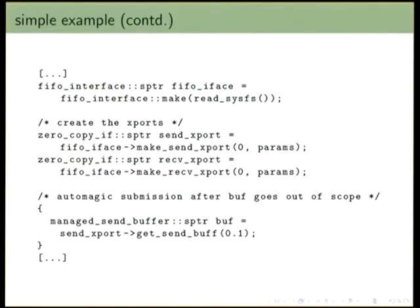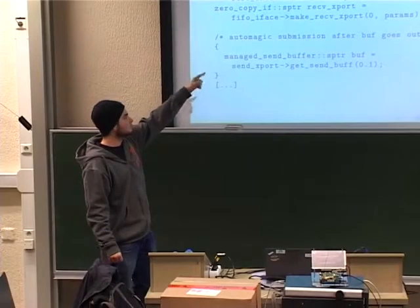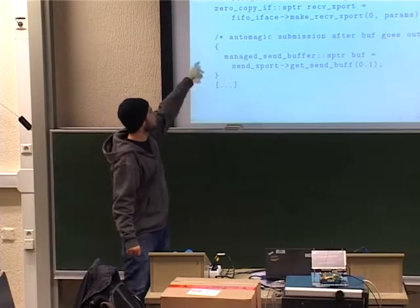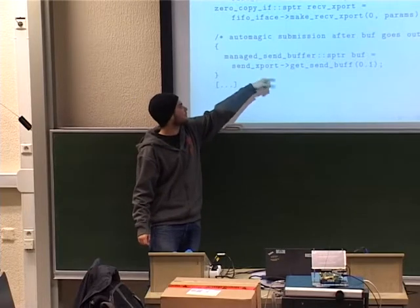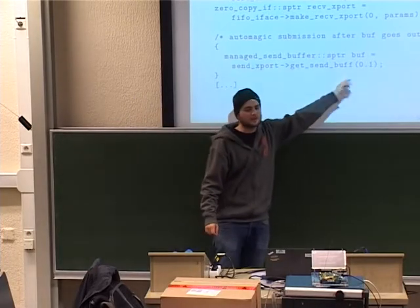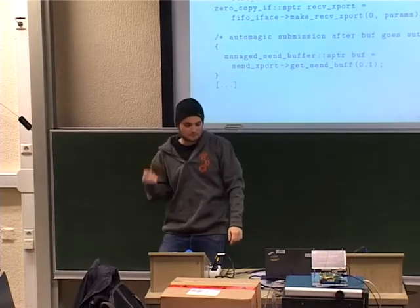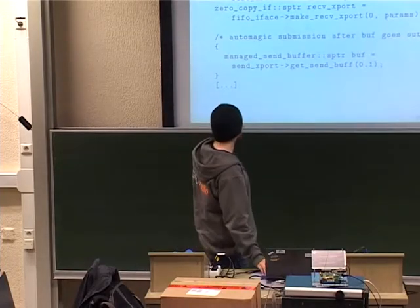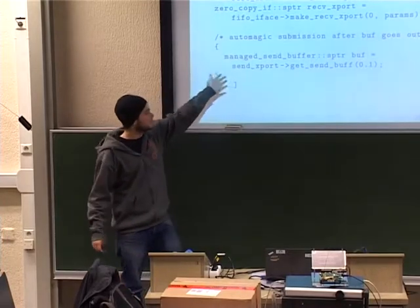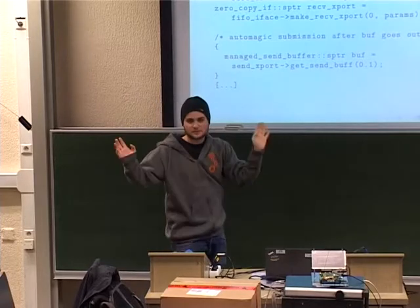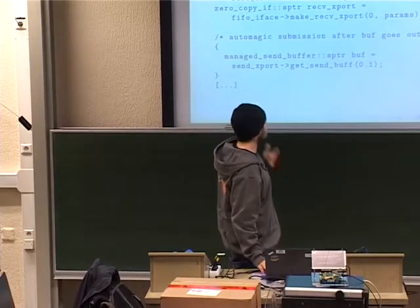Here's the code. Basically, that's all you need to do if you want to send or receive data. You create the transports — you have some C++. You create the send or receive transports, and here I created this artificial scope. This gives me a shared pointer to a buffer. I can specify a timeout or just poll if I'm really eager to have data. Once I reach this point, the buffer goes out of scope and the driver just submits it to the device — and things just happen.